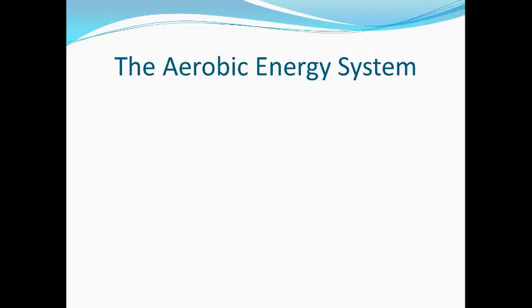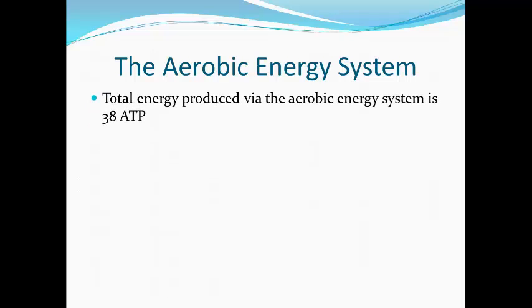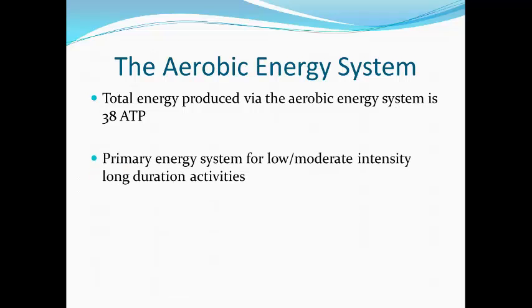Some key points from the aerobic energy system: it produces 38 ATP in total — 2 from stage 1, 2 from stage 2, and 34 from stage 3, the electron transport chain. It is the primary energy system for low to moderate intensity exercise over a long duration. There are no fatiguing byproducts because oxygen is present. If you have the A2 books, please go through those, or visit some useful websites. Bring your notes and we'll go over it in your lesson — there's more to it, but those are the basic principles.